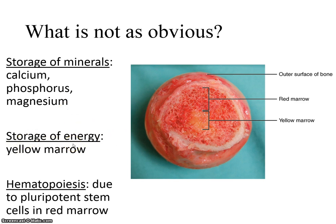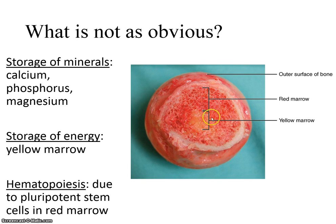Bone also stores energy. It's not a big energy storage tissue, but in the long bones, in what we call the medullary cavity, there's soft tissue called yellow marrow. The yellow color comes from the presence of fat. If you eat meat with bones, particularly red meat with a leg or shoulder cut, you've probably seen bones with the marrow still in them.